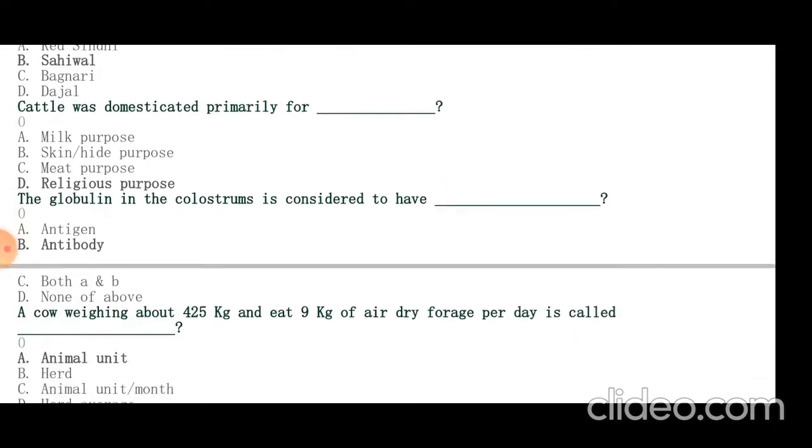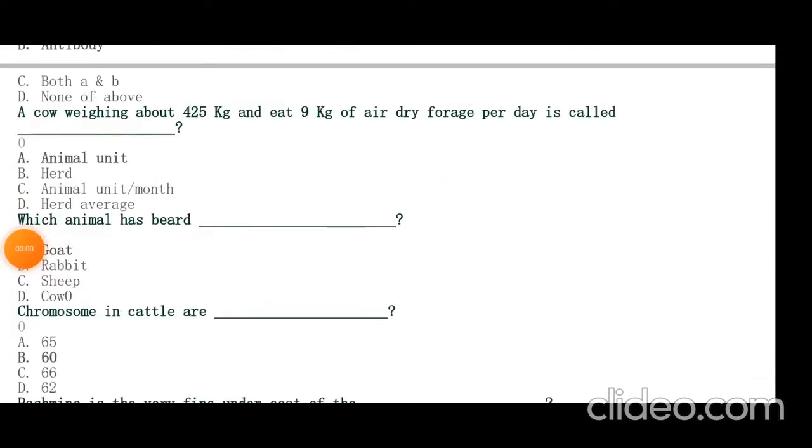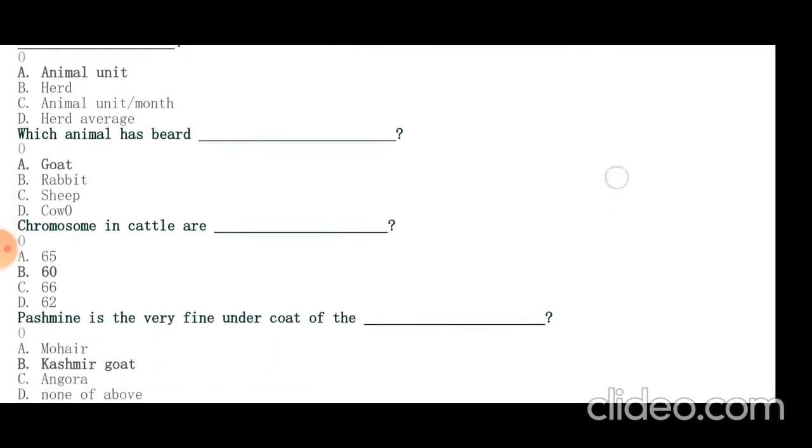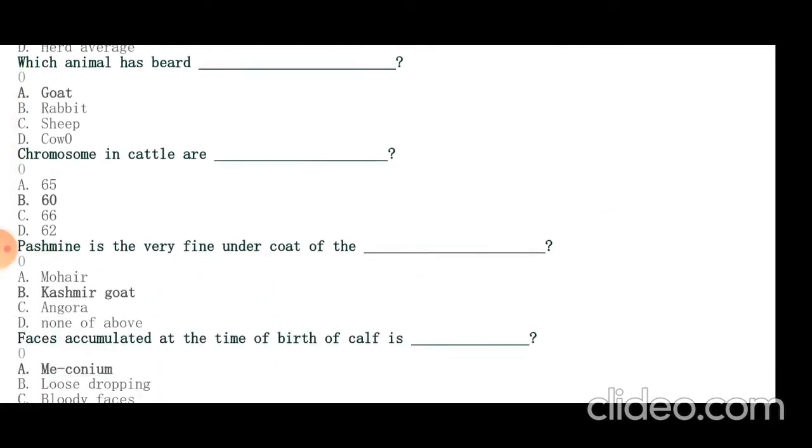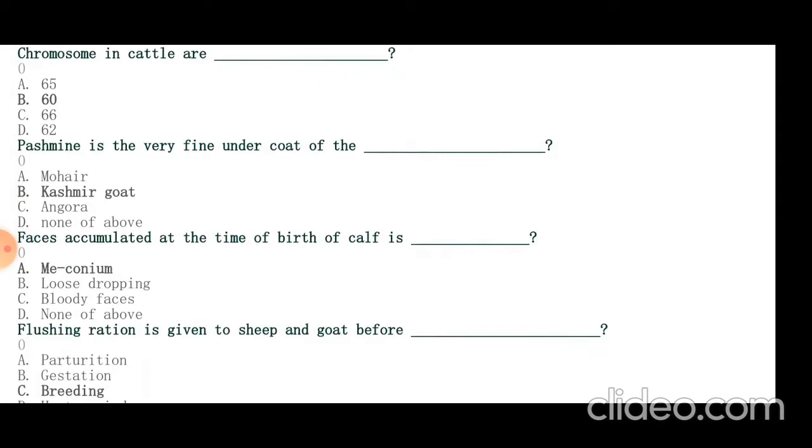A cow weighing about 425 kg and eating 9 kg of dry forage per day is called an animal unit. Chromosomes in cattle are 60, in buffalo 50. Pashmina is the very fine undercoat of Kashmir goat. Feces accumulated at the time of birth of calf is called meconium.